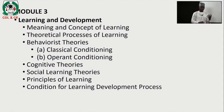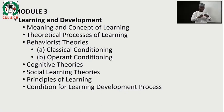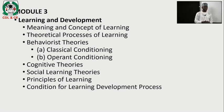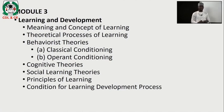We might also pay some attention to cognitive theories and social learning theories. Basically, we are going to look at the principles of learning — the various perspectives that guide learning, the areas of learning that are important for management and organizations in the industrial sector. Furthermore, we are going to look at the conditions for learning development process — what are the various requirements that must be met before we can say there is a development process in learning.